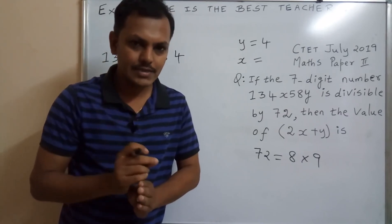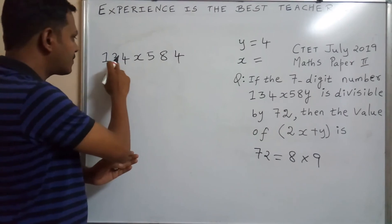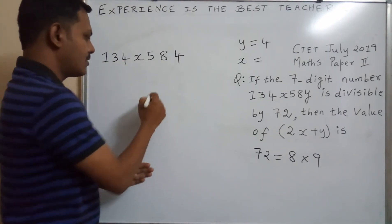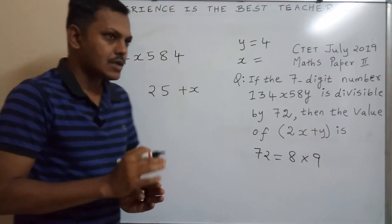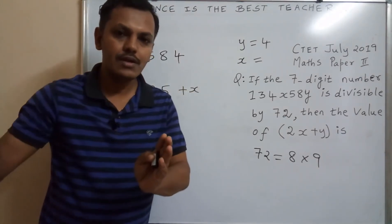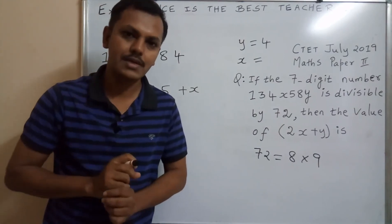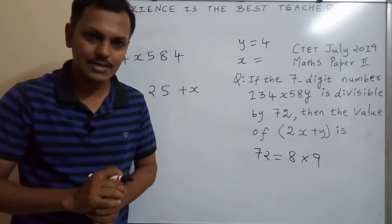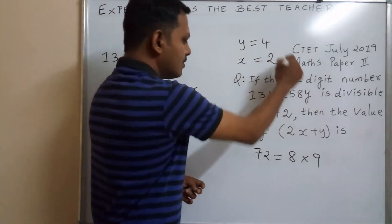We will get only one x value that we can write here. 8 plus 4, 12, plus 5, 17, plus 4, 21, plus 3, 24, plus 1, 25. Write 25 plus x. So in 9th table, between 20 and 29, only one possibility, that is 27, 3 nines are 27. When x equal to 2 only we will get 27, so x equal to 2.